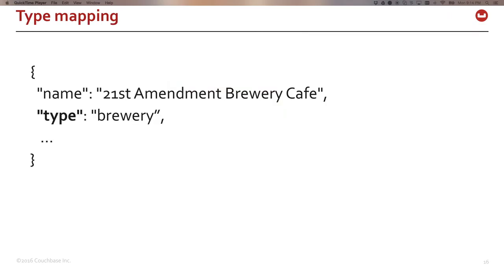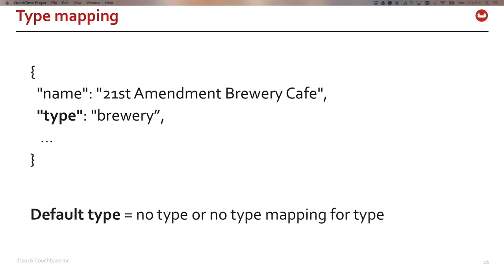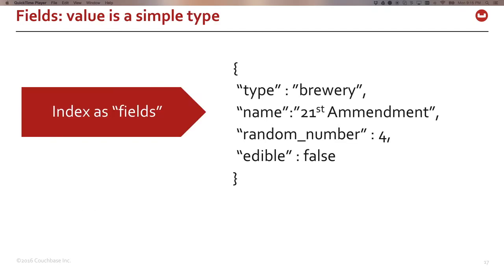Step one in index mapping is to create a type mapping. If your documents are of type 'brewery,' you can create an index mapping for brewery. There's also a special type 'default' that indexes any docs you haven't created an explicit type mapping for, or that don't have a type field.